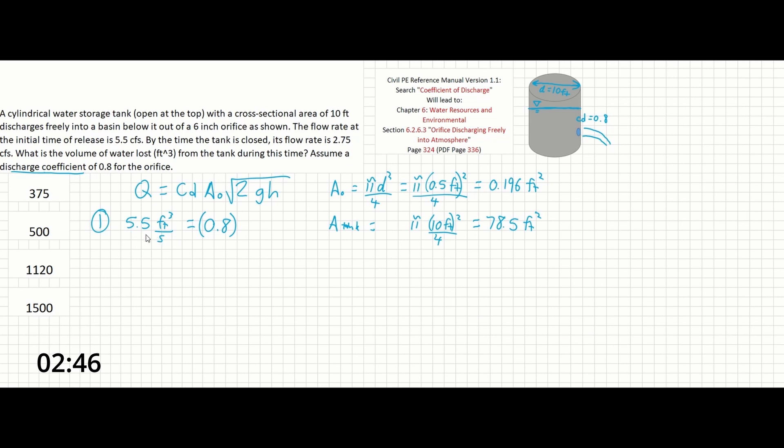Okay, so back to this part of the problem. Let's solve for A of the orifice. Let's move this down just to give us a little bit more room because I like to be organized. Okay, A is going to be 0.196 feet squared times the square root of 2 times 32.2 feet per second squared times H, which is what we're solving for.